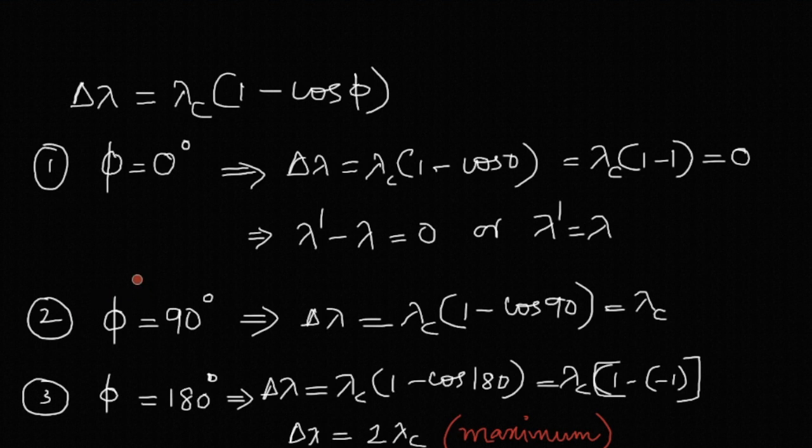Now for 90 degrees, delta lambda will be given by lambda c times 1 minus cos 90. Cos 90 is 0, so you get it as lambda c itself, which is 2.42 picometers.